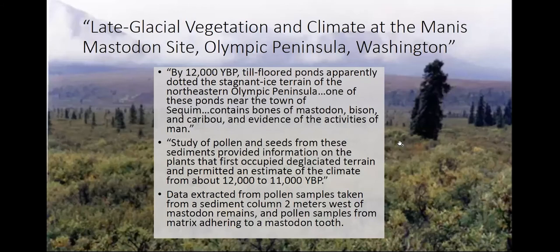One great thing about the Manis Mastodon site is that in addition to the archaeological data, researchers were able to get pollen samples going back over 12,000 years, giving us a detailed picture of what was growing around Sequim right after the last ice age. The landscape looked very different — small ponds, chunks of melting glacial ice, small wetlands, and it was much drier. You would have had a small number of pines or spruces, with the predominant vegetation being shrubs and grasses, and large terrestrial mammals roaming across that landscape with small groups of people hunting them.